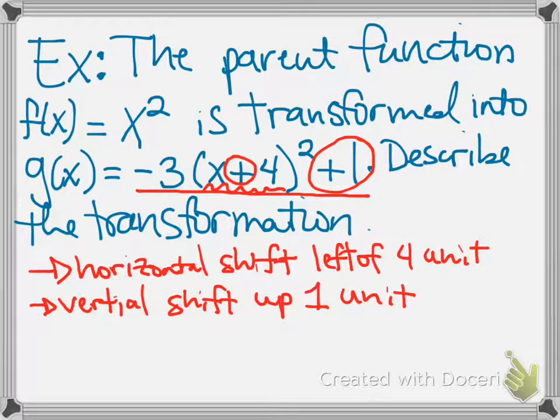We have two more things going on. First of all, we have this multiplication by a negative three. So let's take care of the negative part first. Anytime you see a negative sign, that's going to mean that there's some sort of reflection going on.